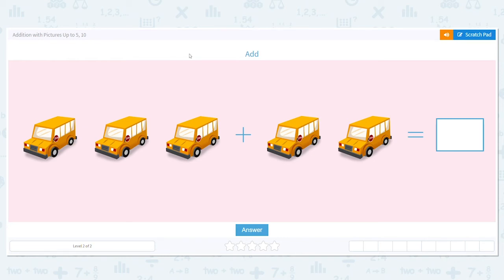Hi, we're going to practice addition with pictures up to 5 or 10. So I see I have buses here. I have two groups of buses. I have one group here and I have one group here. And this sign here, this plus sign means we're going to add, we're going to put them together.